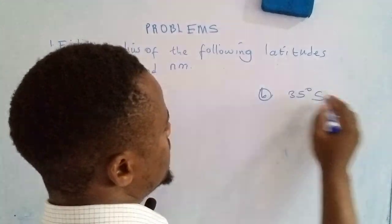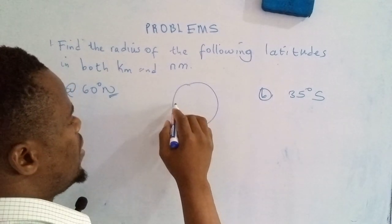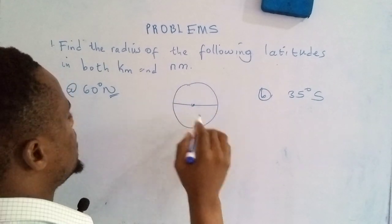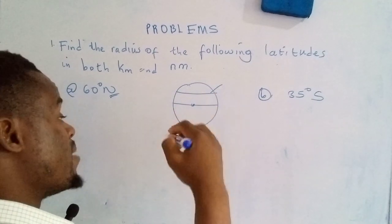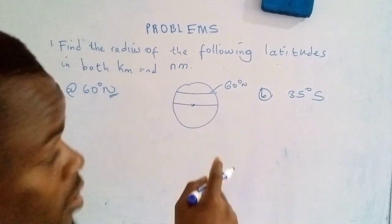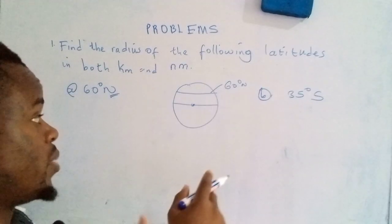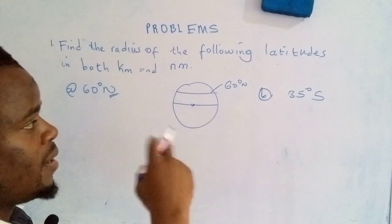So if we have the Earth, and then we have the equator, and then we also have a latitude which is in the northern hemisphere, which is 60 degrees north. That's the latitude that we are looking at, which is 60 degrees north.